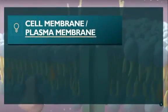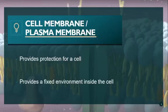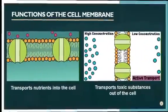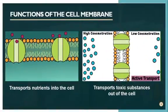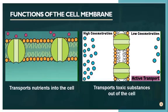The plasma membrane, or the cell membrane, provides protection for a cell and also provides a fixed environment inside the cell. That membrane has several different functions, one of which is to transport nutrients into the cell and also to transport toxic substances out of the cell.